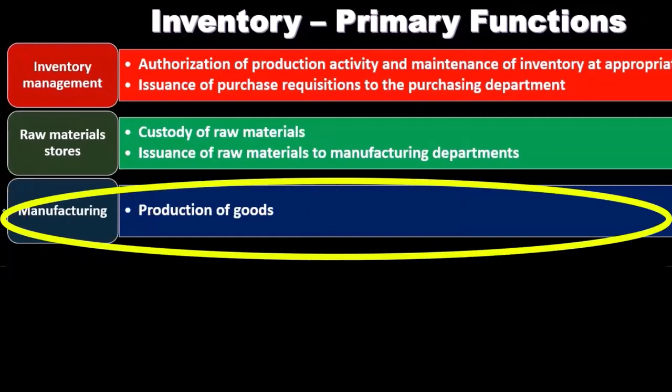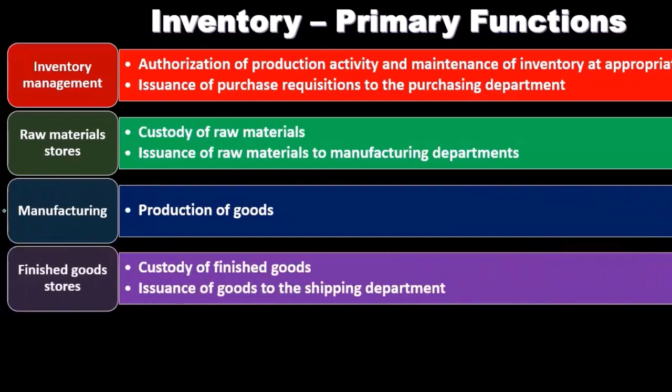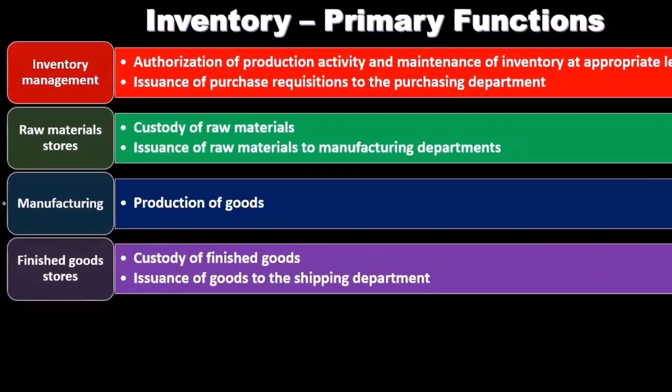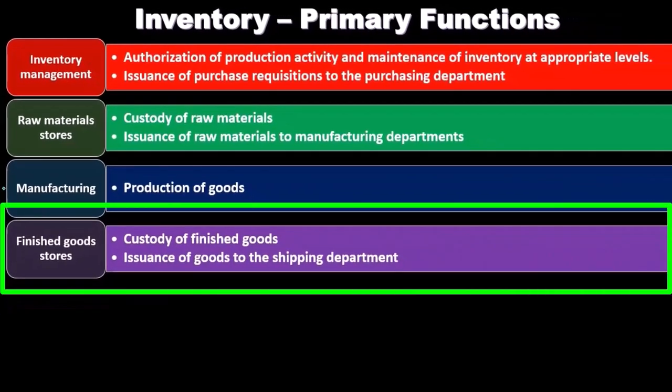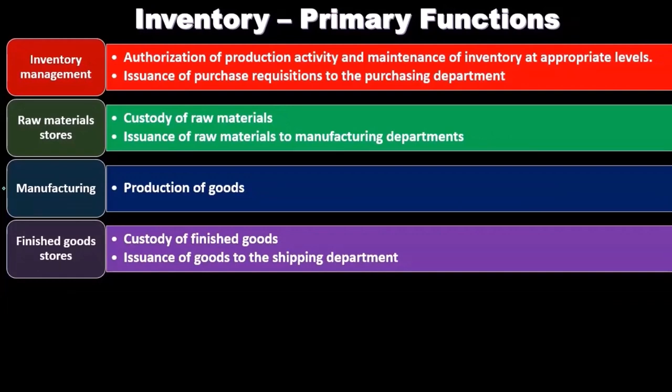Then we have manufacturing, whose primary function is the production of goods. We also have finished goods storage, which involves the custody of finished goods and the issuance of goods to the shipping department.